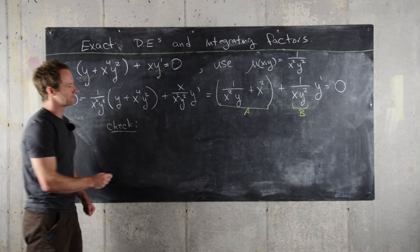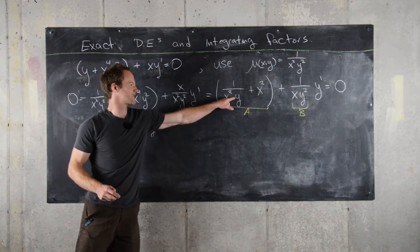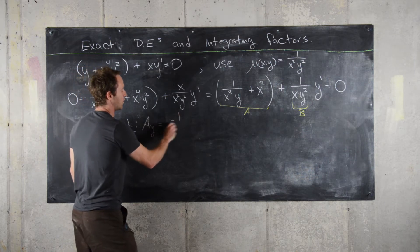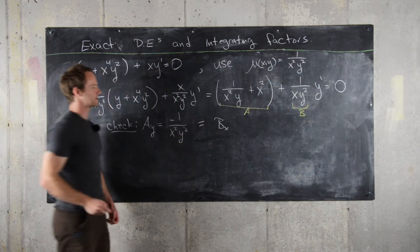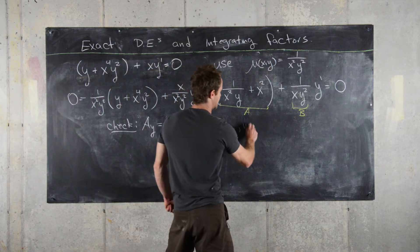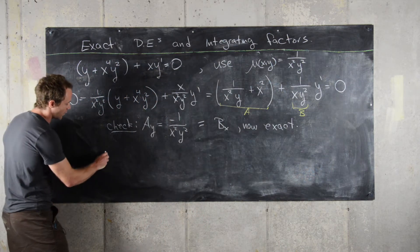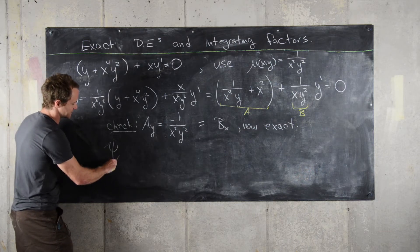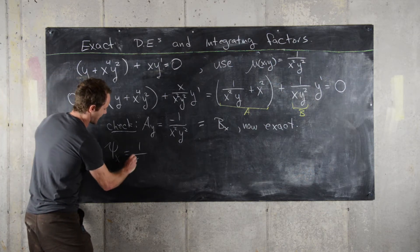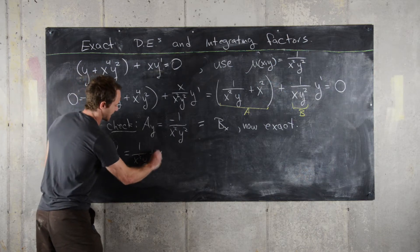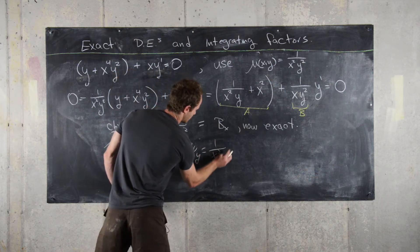Setting A = 1/(x²y) + x² and B = 1/(xy²): ∂A/∂y = −1/(x²y²), and ∂B/∂x = −1/(x²y²) as well — they match. So the equation is indeed exact. This means there exists a function ψ(x,y) where ∂ψ/∂x = 1/(x²y) + x² = A, and ∂ψ/∂y = 1/(xy²) = B.